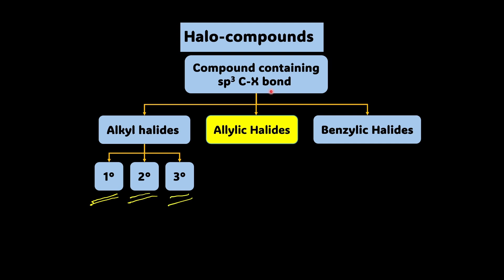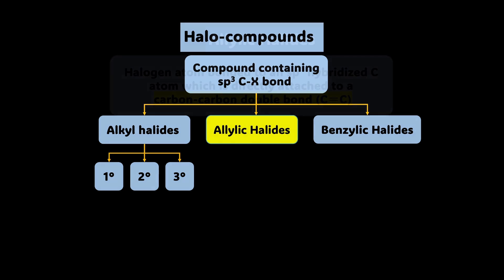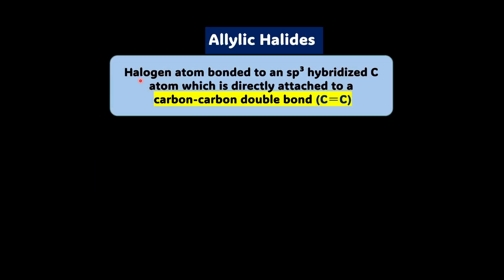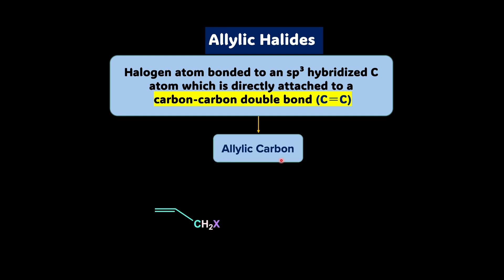Now let's move on to another category of compounds containing the SP3 hybridized carbon-halogen bond — allylic halides. The halogen atom is bonded to an SP3 hybridized carbon atom which is directly attached to a carbon-carbon double bond, which we call the allylic carbon. So there is the carbon-carbon double bond, a single bond, and then this carbon — to this carbon, if the halogen is attached, we call it an allylic halide.